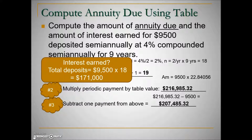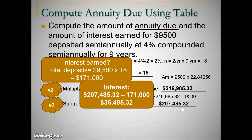To find how much interest was earned, we determine the total deposits: $9,500 times 18 payments. We then subtract that total from the annuity value, and the difference is the interest the account has grown over the nine years.